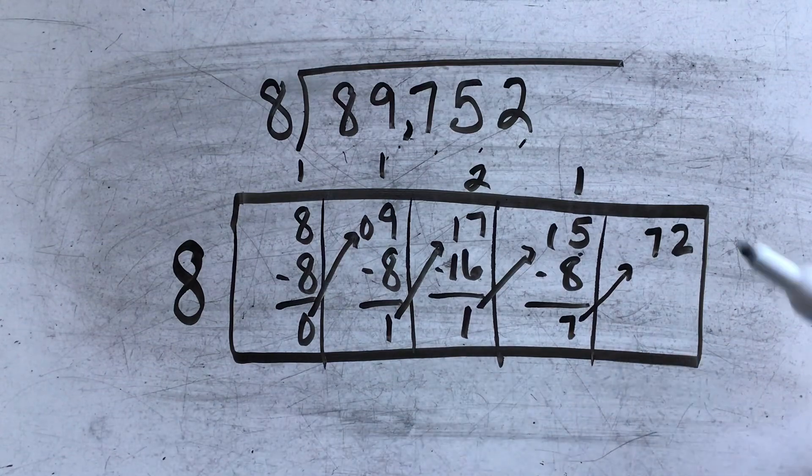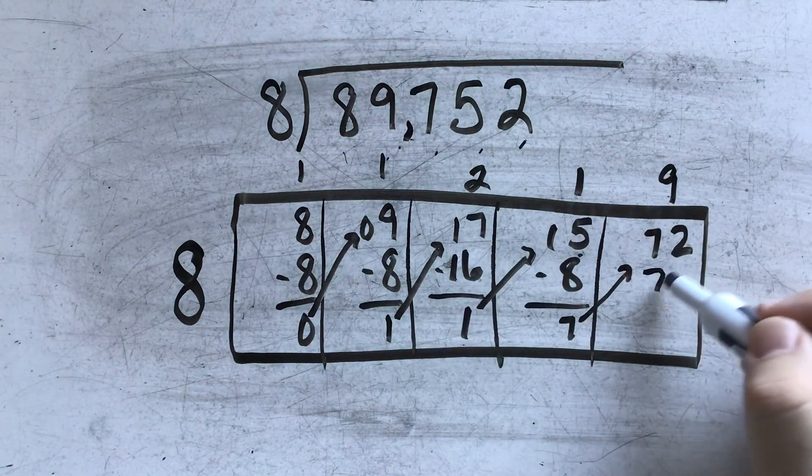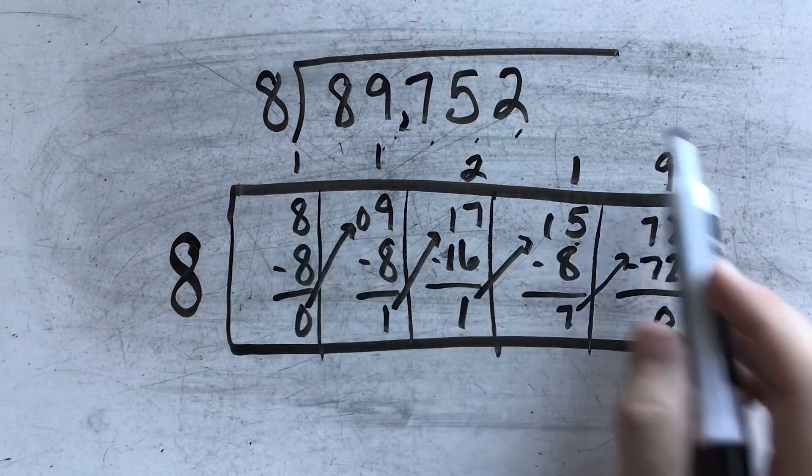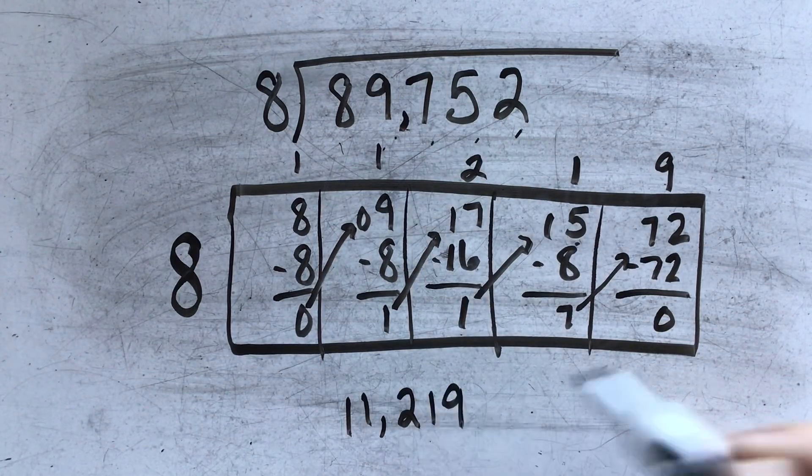And finally, 8 goes into 72 9 times. 9 times 8 is 72. And since I have nothing left over, I have no remainder. And my answer is 11,219.